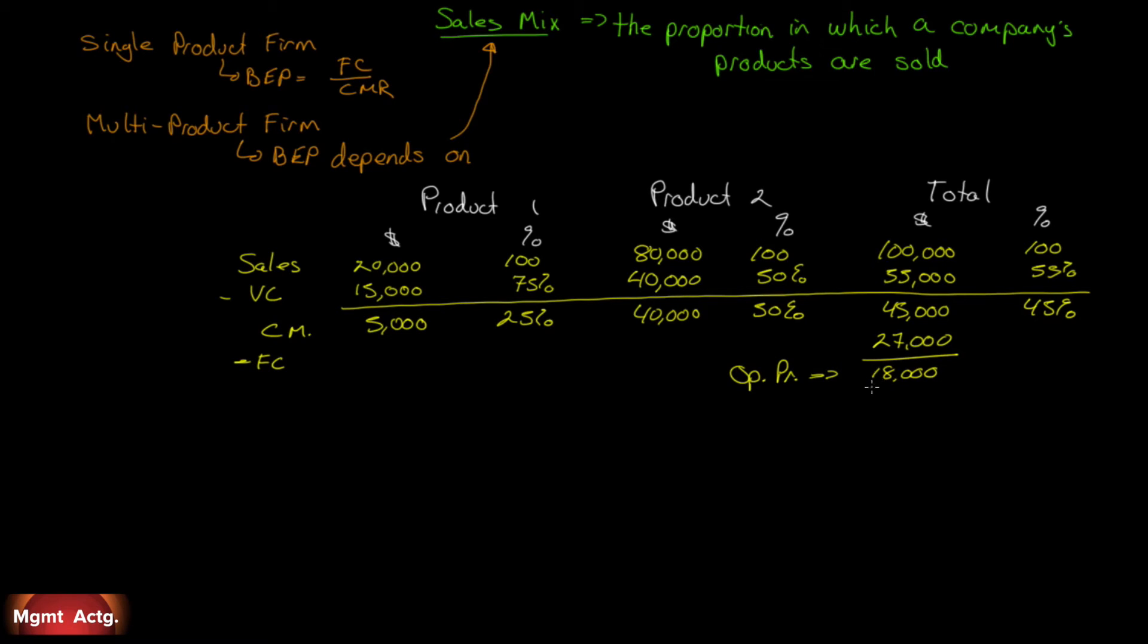So let's do a break-even analysis of this firm. It's a multi-product firm. One slight change to the break-even formula. Our break-even point is still our fixed cost, but it's divided by our overall contribution margin ratio. For a single product firm, it's just divided by the contribution margin ratio. Here it's divided by the overall ratio, and that is 0.45. Even though product one is 0.25 and product two is 0.5, we end up with 0.45 overall. So our break-even in sales is $60,000.